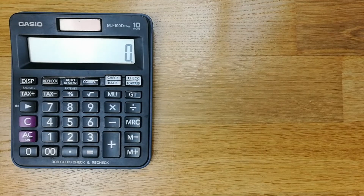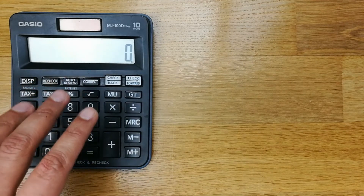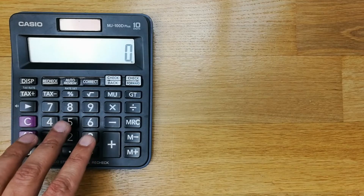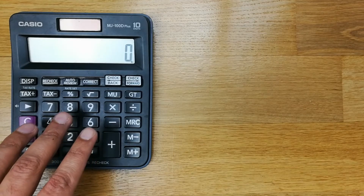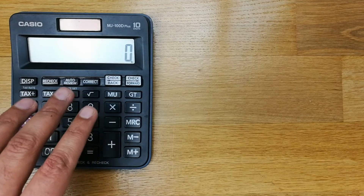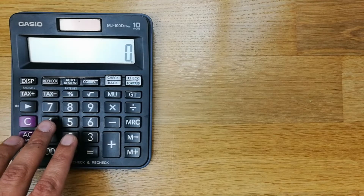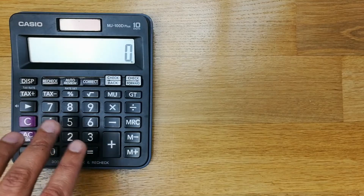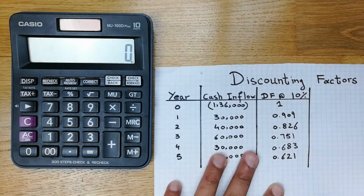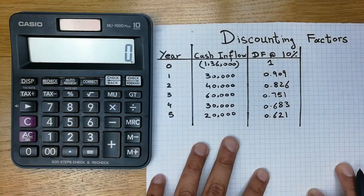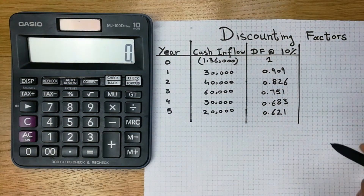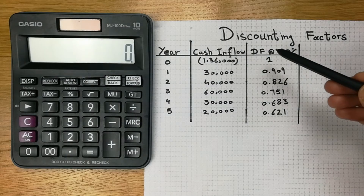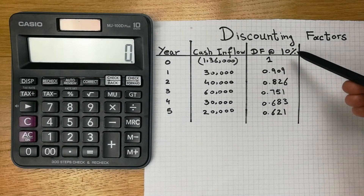Hello guys, I hope you are doing really well. In today's video I will show you how to calculate the discount factors on your calculator. It is really simple. I have an example over here — the discount rate is at 10%.